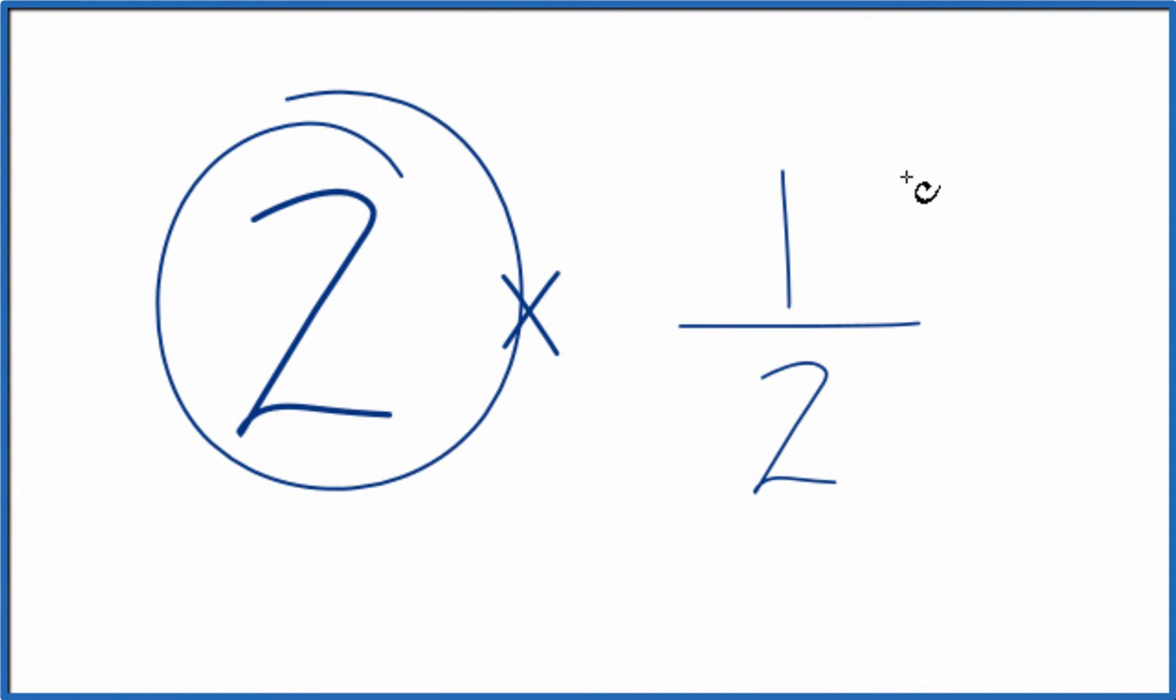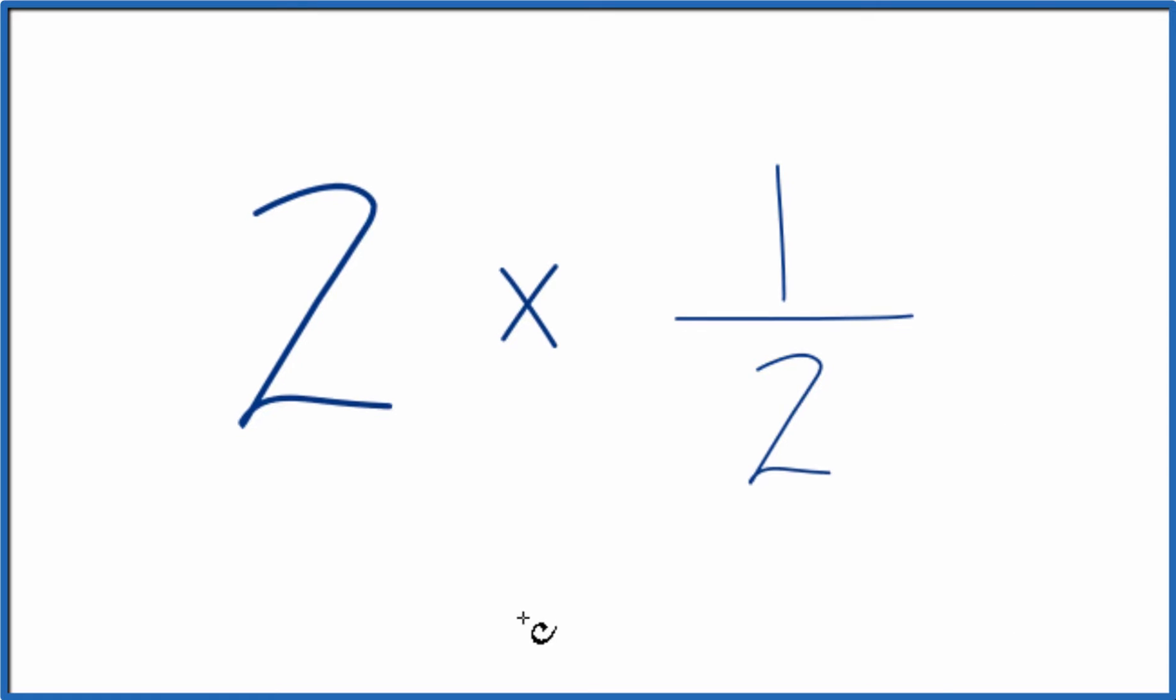Let's multiply two times one-half. Here's how we can do that. First off, we could just think of this as we have two of these one-halves, this fraction one-half.